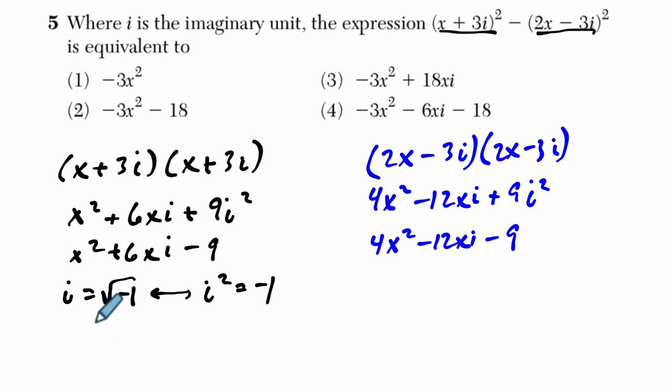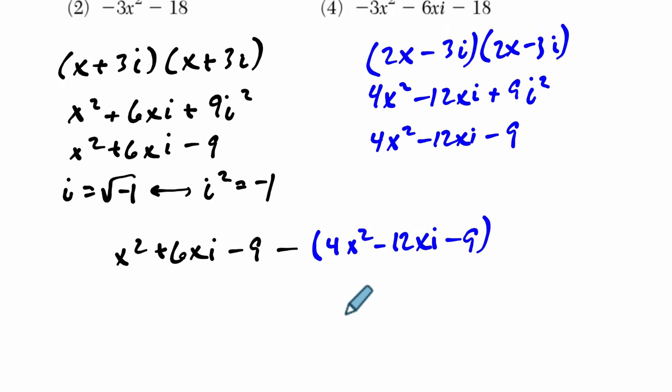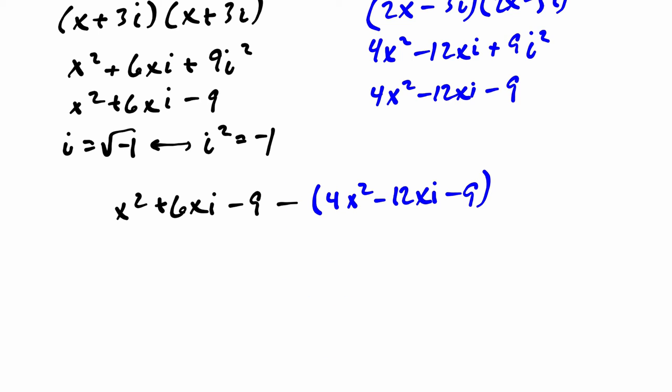Now, if we bring this all together, we have our first term, x squared plus 6xi minus 9, minus, don't forget this subtraction right here, our second term, our second trinomial, 4x squared minus 12xi minus 9. And when we distribute our subtraction sign right here, what do we get?